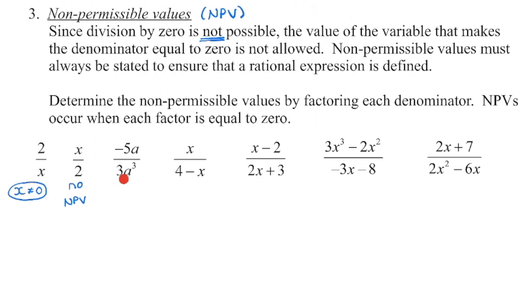So then in this denominator, you're going to say, what could a be that would make this whole thing zero? Well, we know because we're multiplying, a cannot equal zero, and we're going to circle our non-permissible value. Now, you may recognize in our next one, and again we're only looking at the denominator, what number here would make the denominator zero? Well, it's going to be four.